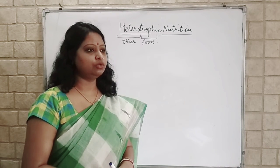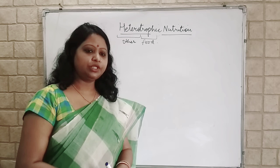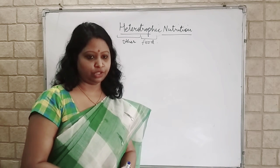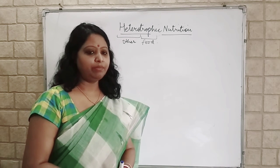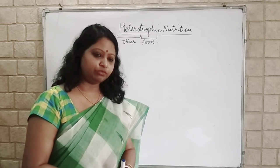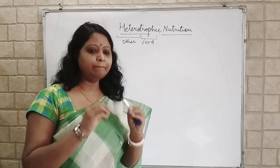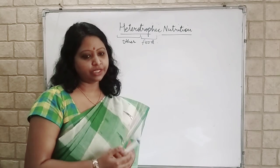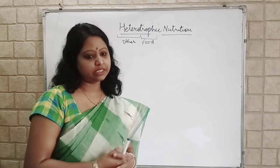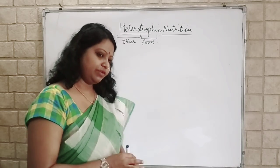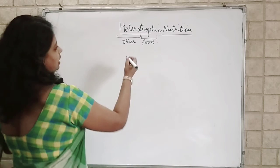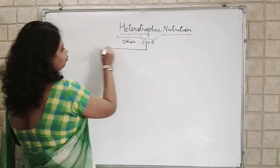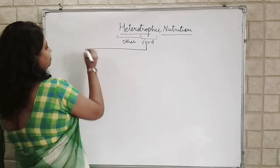In plants also, there are many plants which are dependent on other organisms for nutrition — maybe for complete food, or maybe for some parts of the food, like few nutrients or few minerals. We are going to study about this in this class. We will divide it into four types.